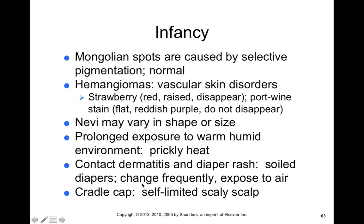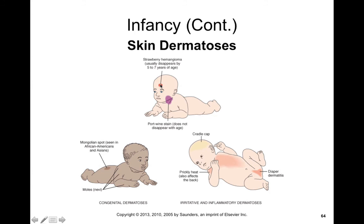Cradle cap, which we discussed with seborrheic dermatitis in infants, is a self-limiting scaly scalp condition that's inflammatory but not a cause for concern. This slide shows different types of skin dermatoses: strawberry hemangiomas usually disappear in childhood; port wine stained hemangiomas typically don't disappear and are called port wine stains because they're purplish. Mongolian spots are more common in African Americans and Asians and have a darker pigmented area. Other skin conditions include diaper rash or contact dermatitis, seborrheic dermatitis (cradle cap), and prickly heat from warm humid air.